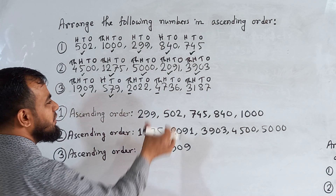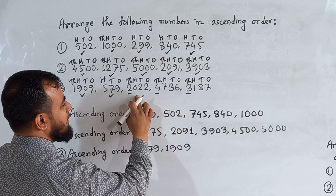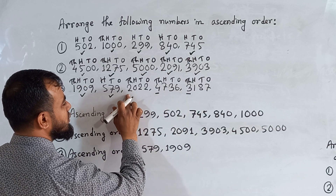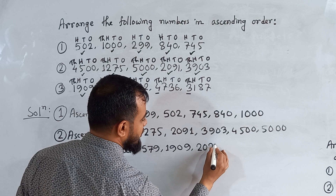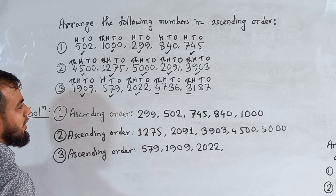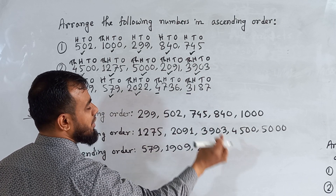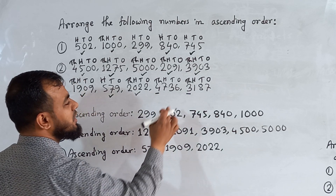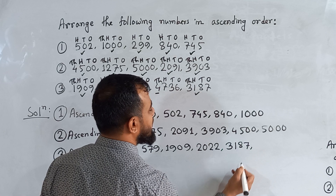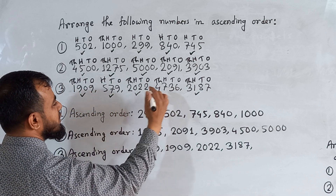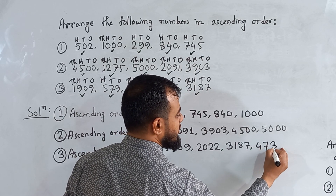Now three numbers remain with thousands digits 2, 4, and 3. Since 2 is the smallest, 2022 is written next. Then between 4 and 3, since 3 is smaller than 4, we write 3187 next. The largest number, 4736, goes in the last place. So the ascending order for question three is: 579, 1909, 2022, 3187, 4736.